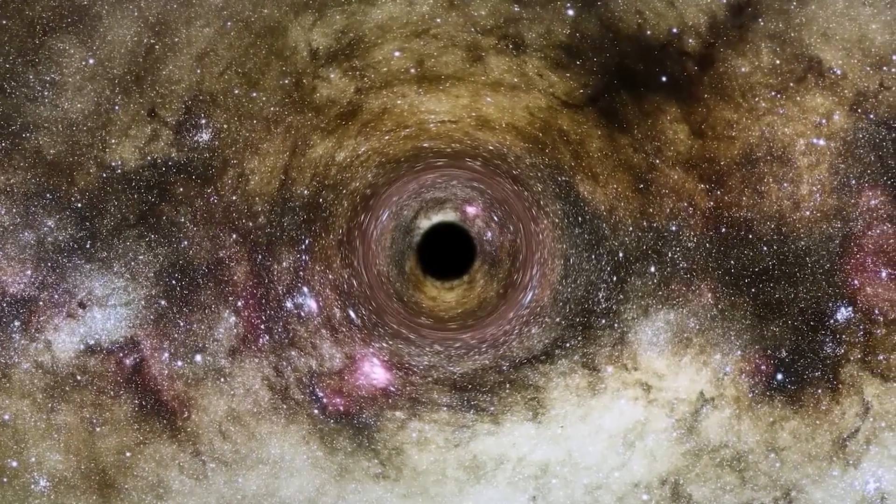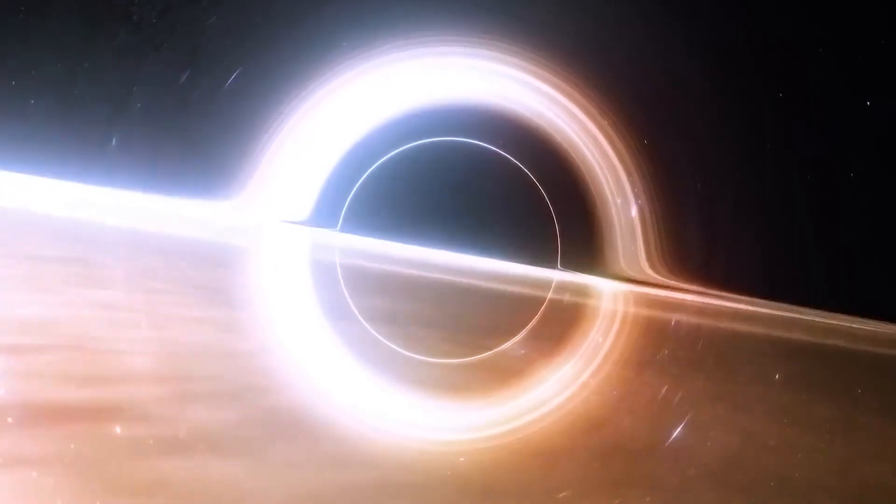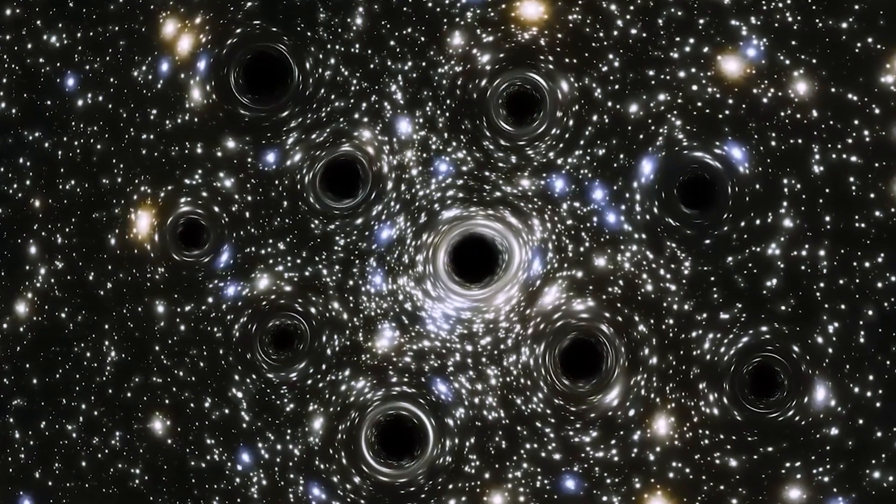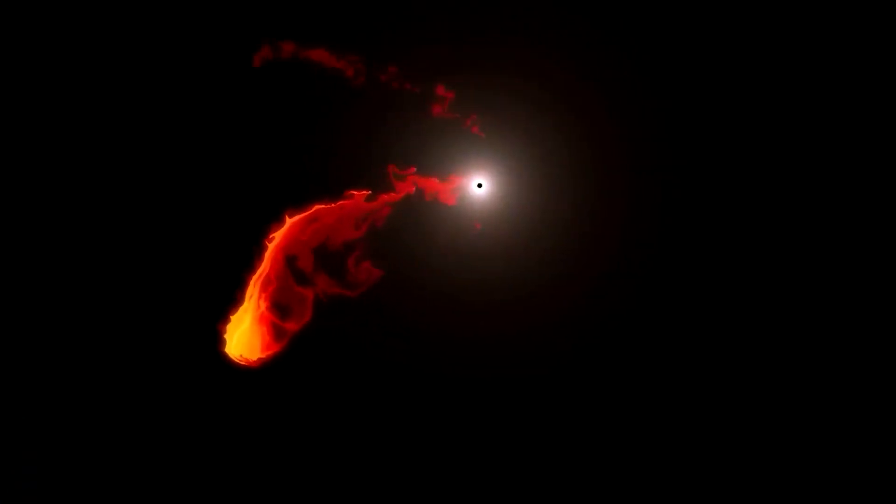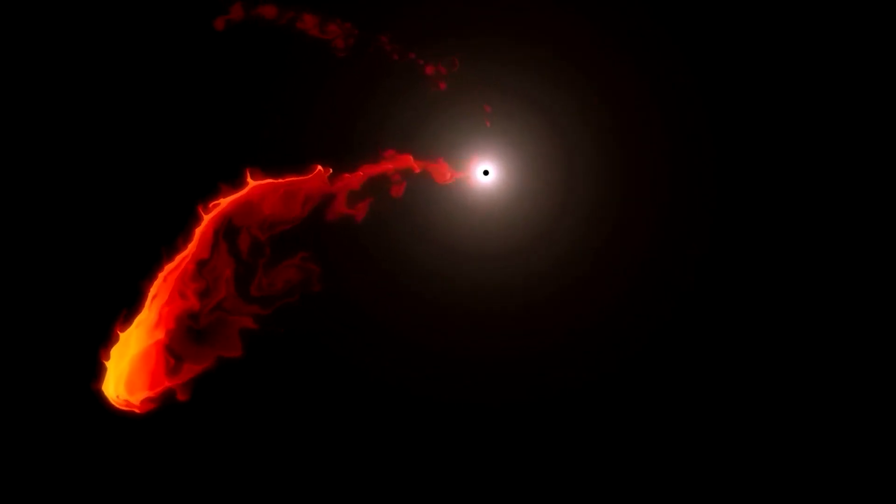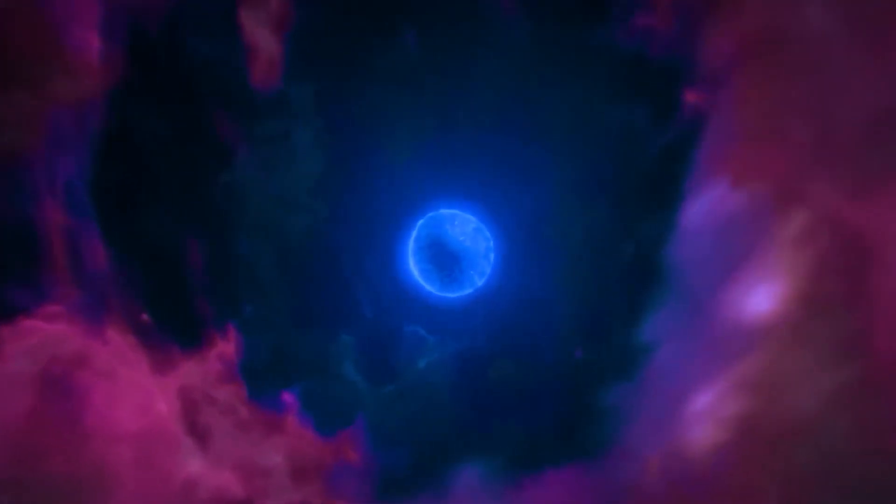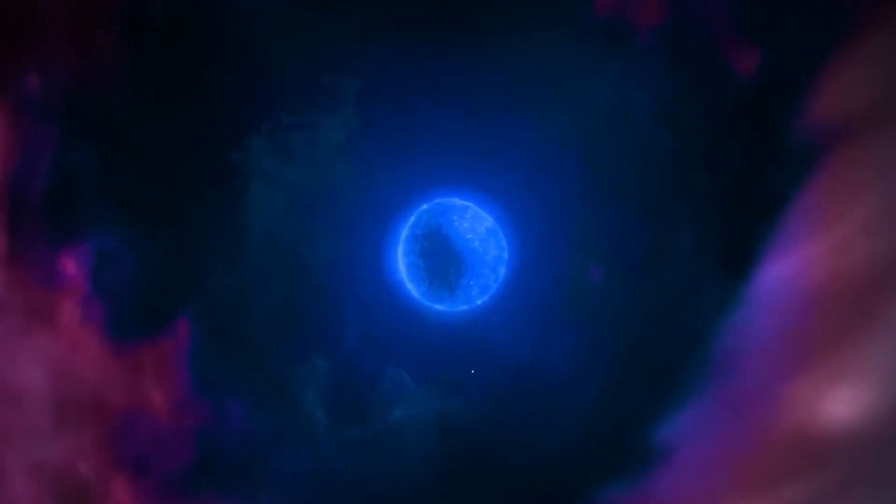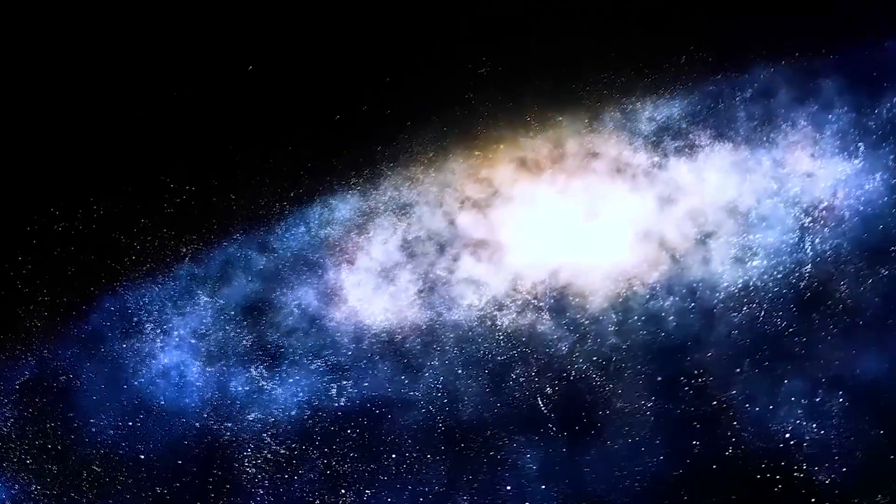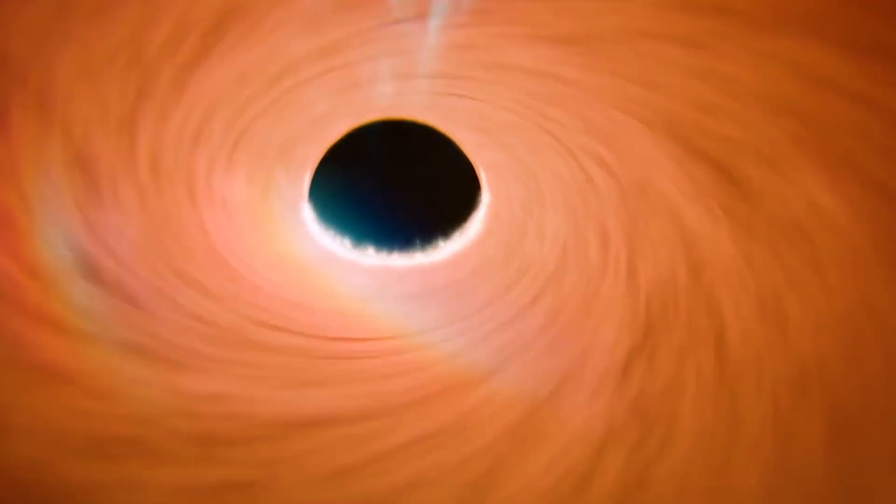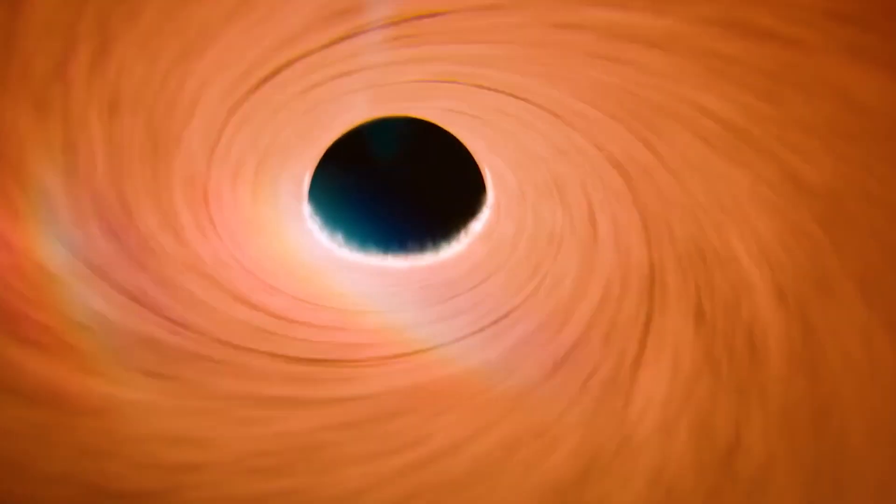This black hole is so massive that it defies our understanding of how these cosmic entities form. It's believed that black holes form when a star collapses in on itself. But this black hole is too big to be formed that way. We believe that this black hole may have formed from the collision of several smaller black holes.